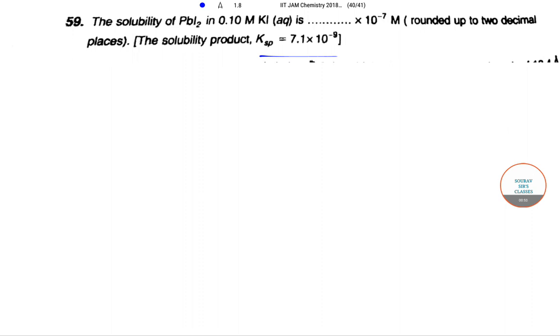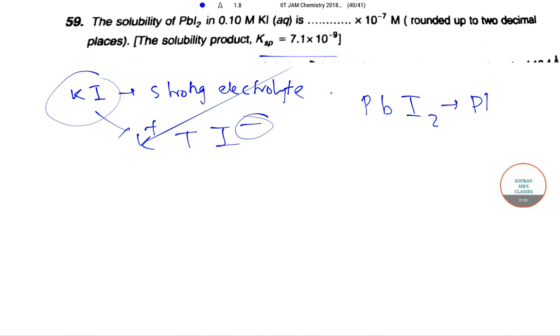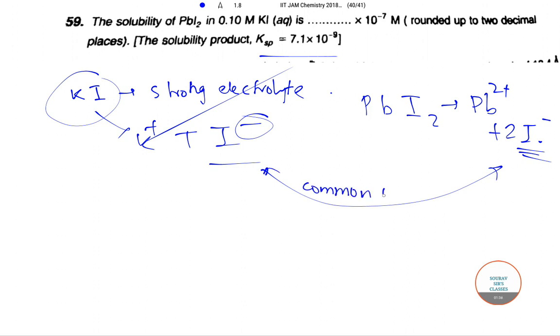We know that KI is a strong electrolyte, so it suppresses the dissociation of PbI2 because of the common ion effect. In solution, this will be present as K+ + I-, and PbI2 also has Pb2+ + 2I-. Since both have I-, this gives rise to common ion effect. Hence, the presence of KI in solution affects the dissociation of PbI2, and as a result, the solubility of PbI2 will decrease.